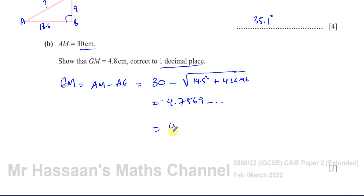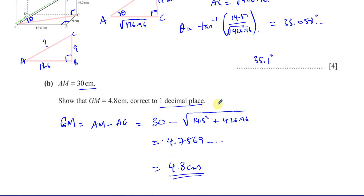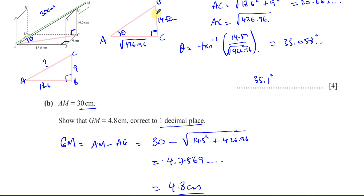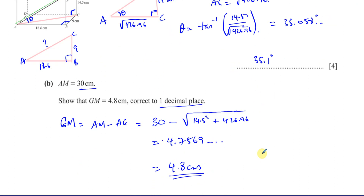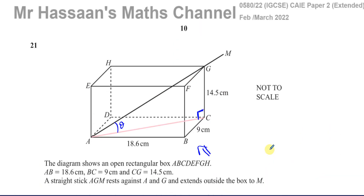Rounding 4.7569 to one decimal place gives 4.8 cm, as required. So we've shown that GM is 4.8 centimeters correct to one decimal place. The steps are: total stick length AM minus AG, where AG is found by Pythagoras. That completes question 21. Other questions from this paper and from the 3D trigonometry topic can be found in the playlists linked here — subscribe and see you soon.